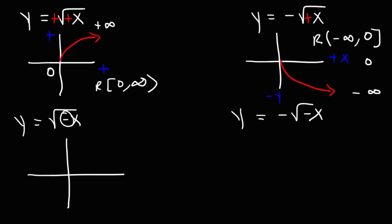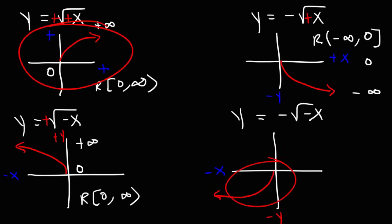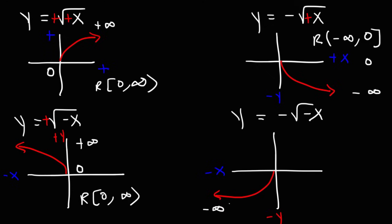For the square root of negative x, the negative is on the inside and positive on the outside, so the graph goes toward the negative x-axis but the positive y-axis — it reflects over the y-axis. The lowest y value is 0 and the highest is infinity, so the range is 0 to infinity. For negative square root of negative x, both signs are negative, so it reflects over the origin toward quadrant 3. The lowest y value is negative infinity and the highest is 0, giving a range of negative infinity to 0.